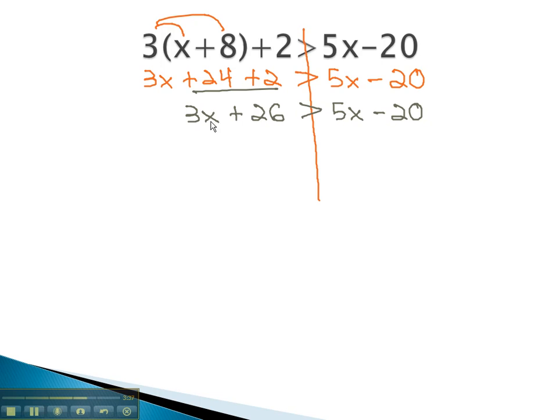Next, we notice that the variable is on both sides, so we will subtract 3x, moving the small one, so all the variables are on the same side of the inequality. 26 is greater than 2x minus 20.